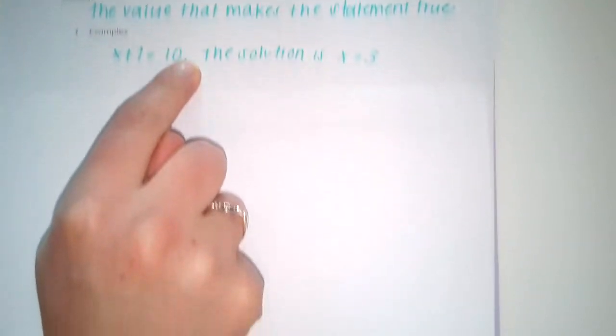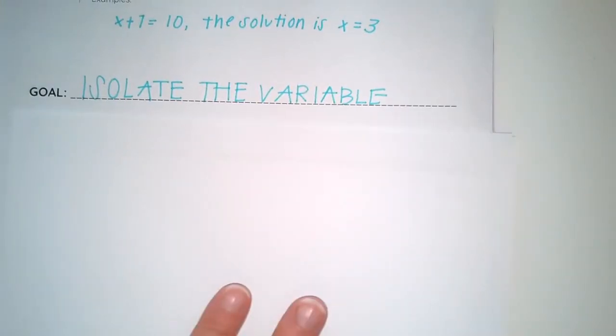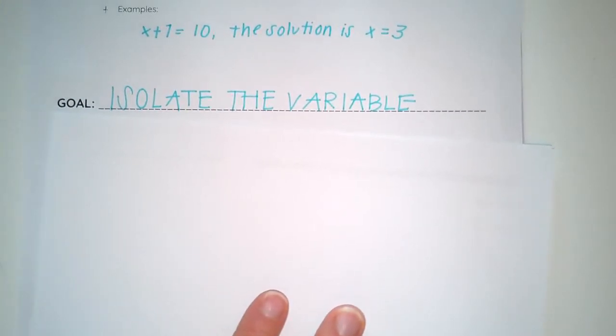When we are solving equations, there are several steps that we need to follow. But first, let's talk about the goal. Our goal in solving equations is to isolate the variable. What is our goal? To isolate the variable.